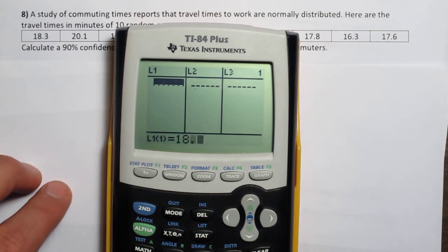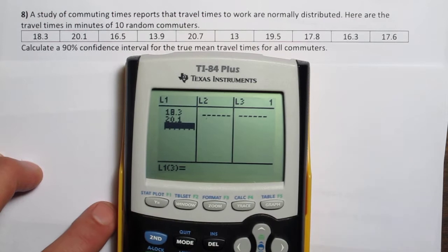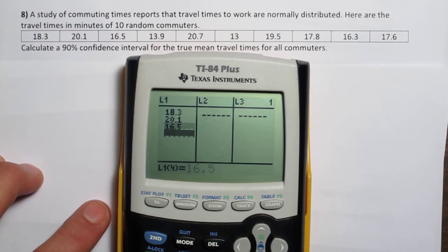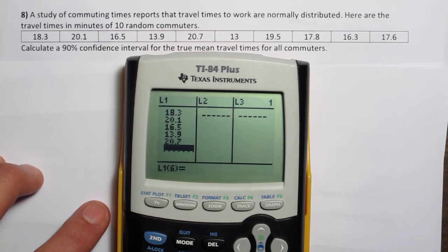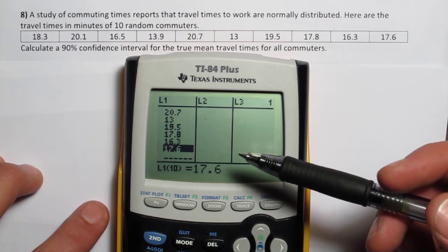Let's input the data: 18.3, 20.1, 16.5, 13.9, 20.7, 13, 19.5, 17.8, 16.3, and 17.6. So there's our 10 pieces of data.